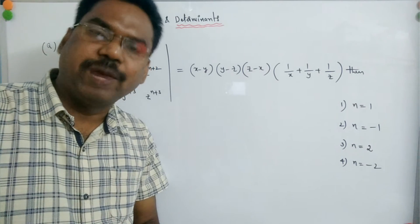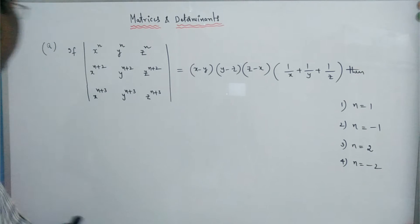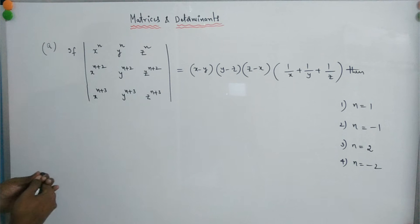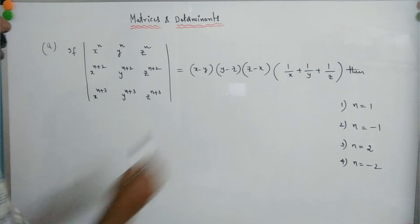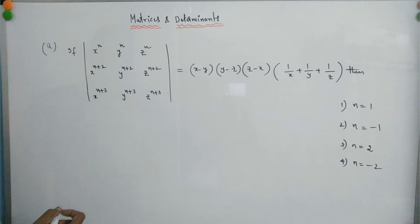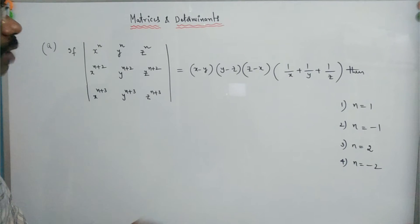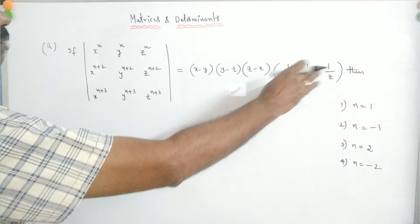Now here, first problem: if the determinant of x^n, y^n, z^n; x^(n+2), y^(n+2), z^(n+2); x^(n+3), y^(n+3), z^(n+3) is equal to (x−y)(y−z)(z−x) into (1/x + 1/y + 1/z), we need to find n. Now we will assume xyz, and xy + yz + zx.